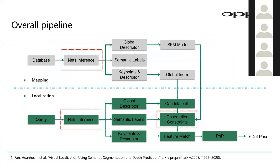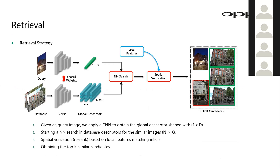Let me go through the total pipeline. Different from the last time in the CVPR, this time we have modified three parts. The first is the retrieval part, where we have a more powerful and stable image retrieval CNN to get global descriptors of every image. We also utilized a more powerful and efficient semantic segmentation network called BISENet. The third part is that we changed from 2D-to-2D matches to 2D-to-3D visual localization, called Observation Constraints.